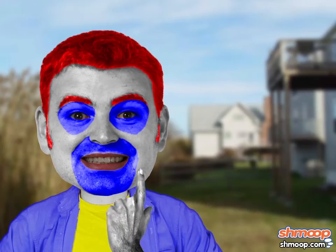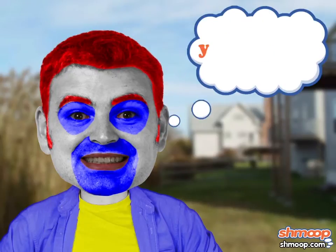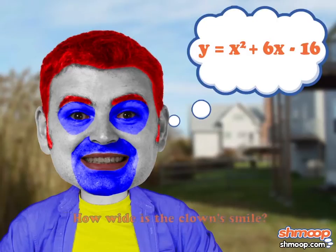The clown tells you his smile can be modeled by the equation y equals x squared plus 6x minus 16. How wide is the clown's smile, you ask?